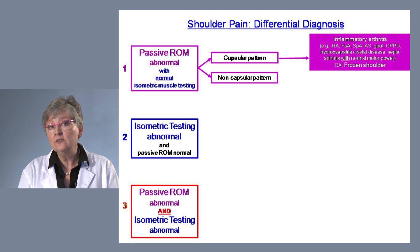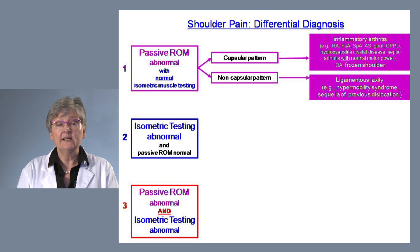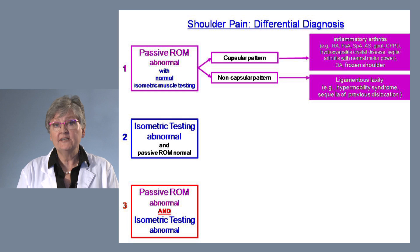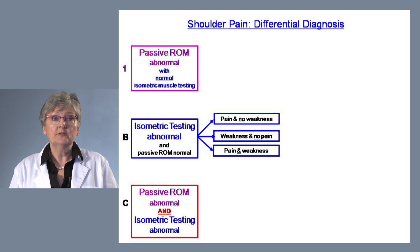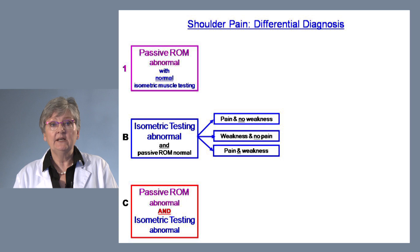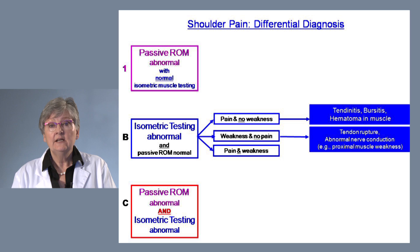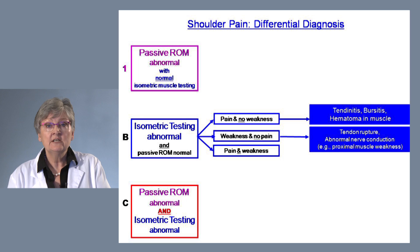How do you get abnormal passive range of motion in a non-capsular pattern with normal isometric muscle testing? This is the group where we see ligament laxity — for example, a previously dislocated shoulder with laxity in one or two directions, or a patient with hypermobility syndrome. For isometric muscle testing, pain and no weakness implicates tendinitis, bursitis, or a hematoma in the muscle. Weakness and no pain implies tendon rupture or abnormal nerve conduction, such as proximal muscle weakness.